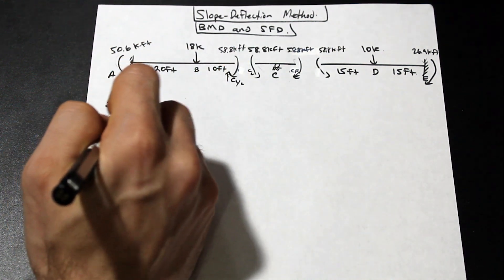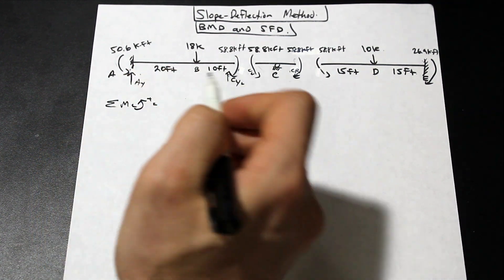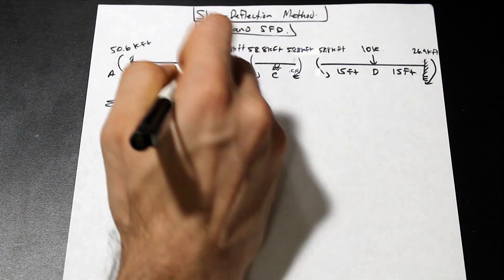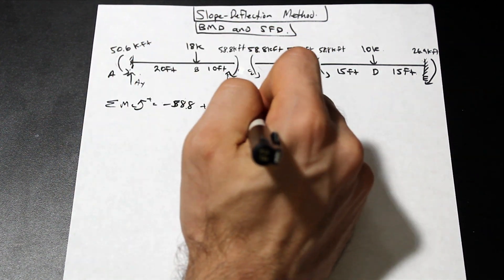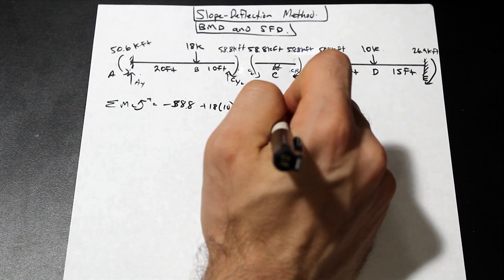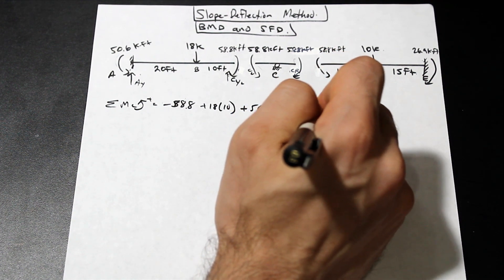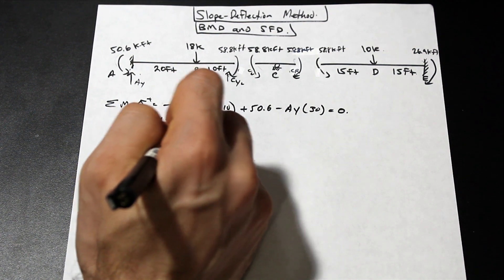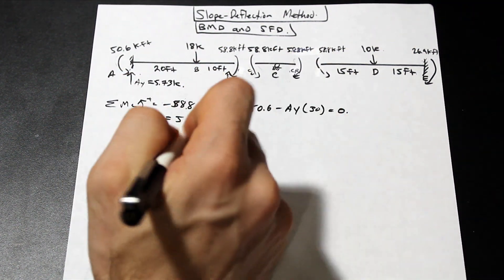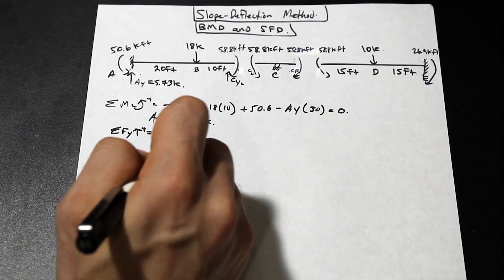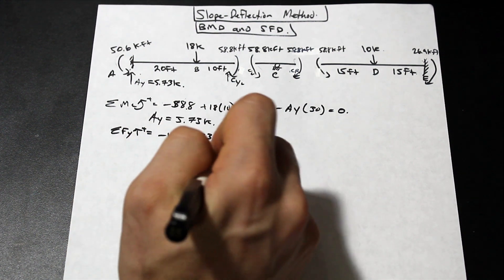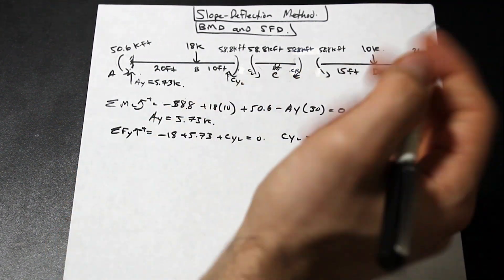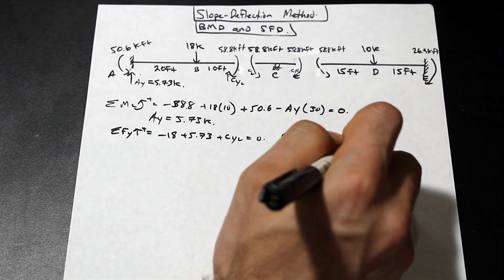Taking the moment about C of section AC — counterclockwise positive — we have negative 58.8, a positive moment of 18 times 10, a positive end moment, and AY times negative 30 feet, all equal to zero. Solving for AY gives 5.73 kip. Then from the sum of forces in Y: negative 18 plus 5.73 plus CY-left equals zero, so CY-left equals 12.27 kip.